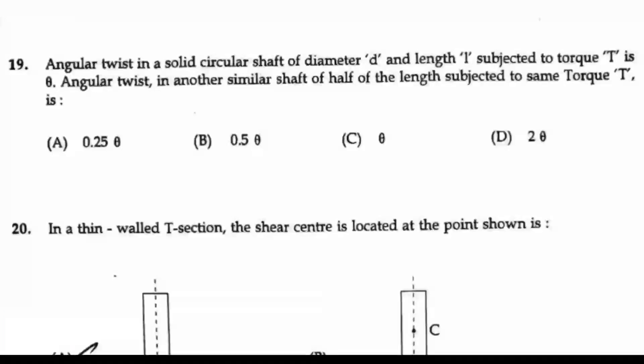Question 19: The angular twist in a solid circular shaft of diameter D and length L subjected to torque T is θ. They have given the angular twist value as θ. Next: angular twist in another similar shaft of half the length subjected to same torque T. So it has the same torque T but the length is half of the previous one. Now we have to find θ₂.